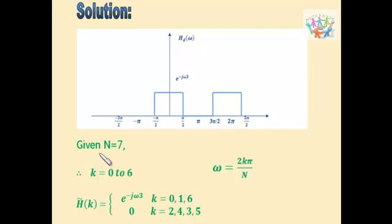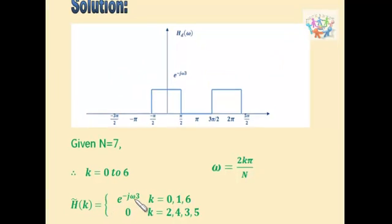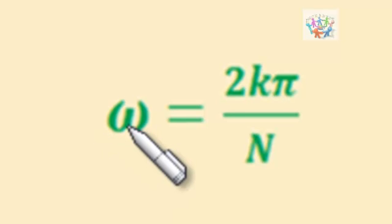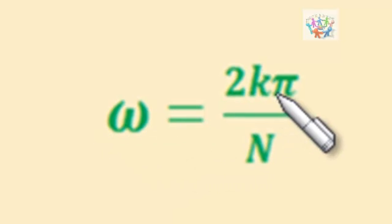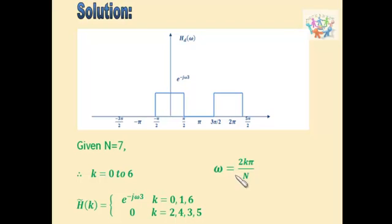Given that N is equal to 7, we can get the values for k as 0 to 6. H̄(k) is given by e^(−j3ω). Substituting the value omega equal to 2kπ/N, and substituting k equal to 0 we will get 0. From the graph we can see that 0 lies in the range of e^(−j3ω).